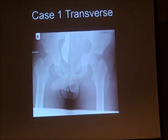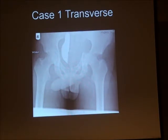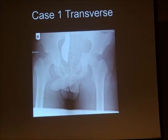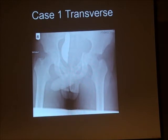One additional point about the transverse fracture pattern: the fracture inclination changes across the three subtypes. The infratectal fracture is pretty transverse, the juxtatectal is more oblique, and the transtectal is even steeper and more oblique, going right back up toward the SI joint and greater sciatic notch. Here is an example of a juxtatectal transverse fracture.